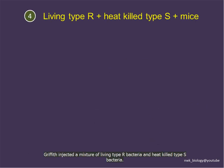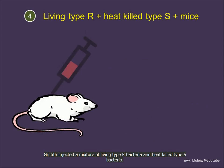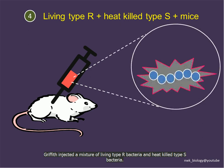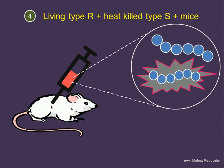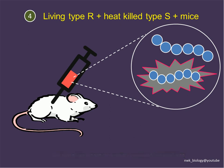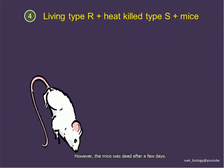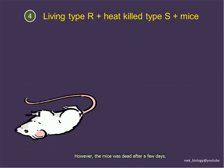In the last set of experiments, Griffith injected a mixture of living type R bacteria and heat-killed type S bacteria. Since both strains are non-virulent, the mice should remain alive. However, the mice died after a few days.